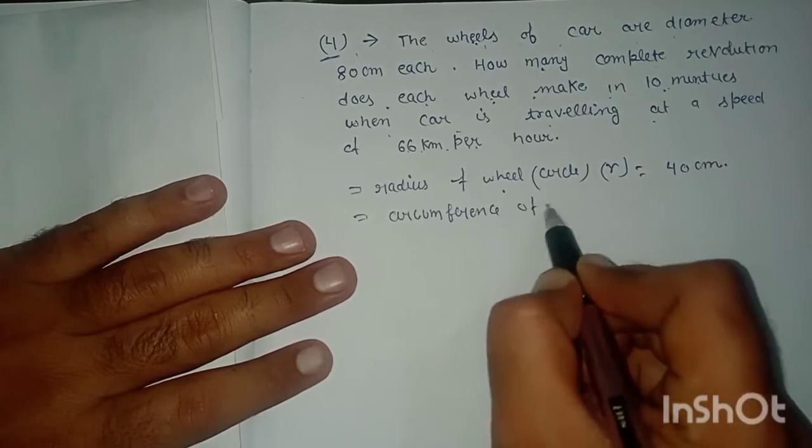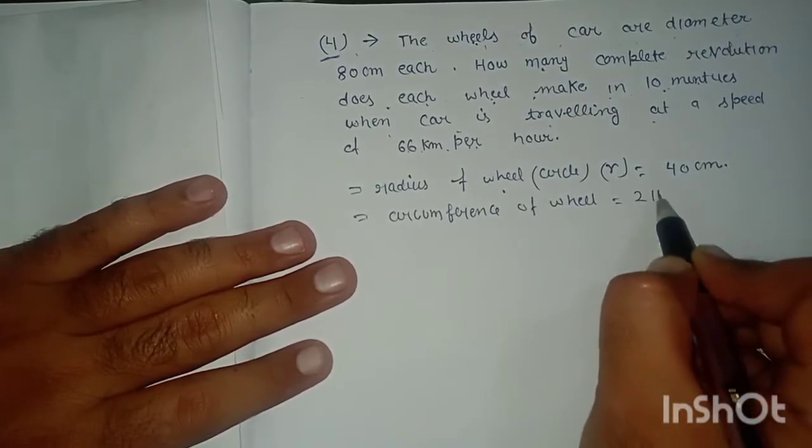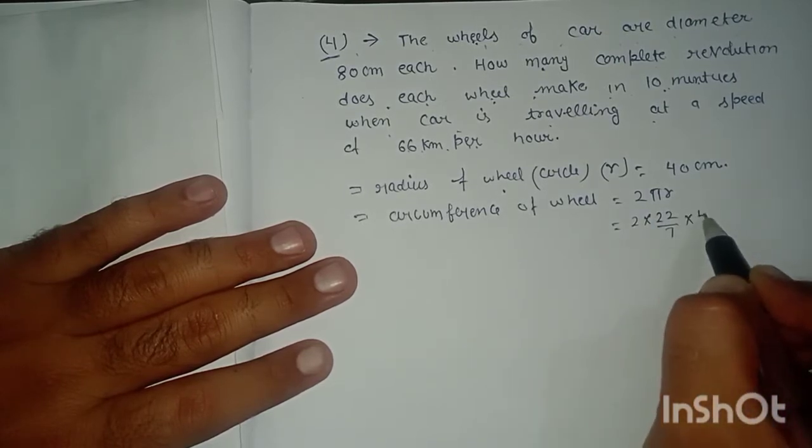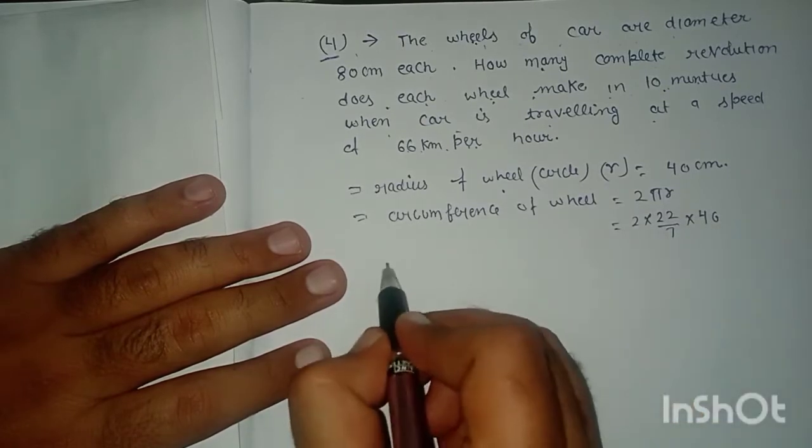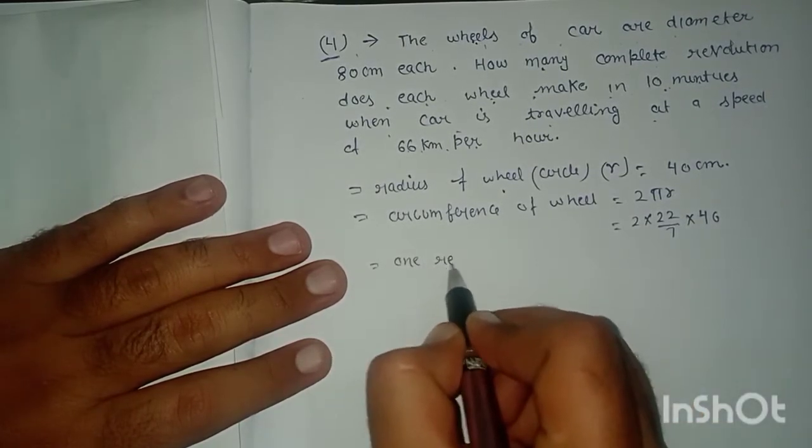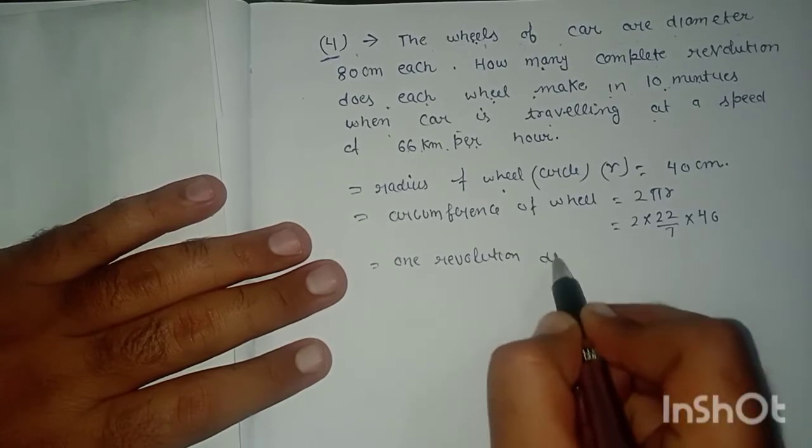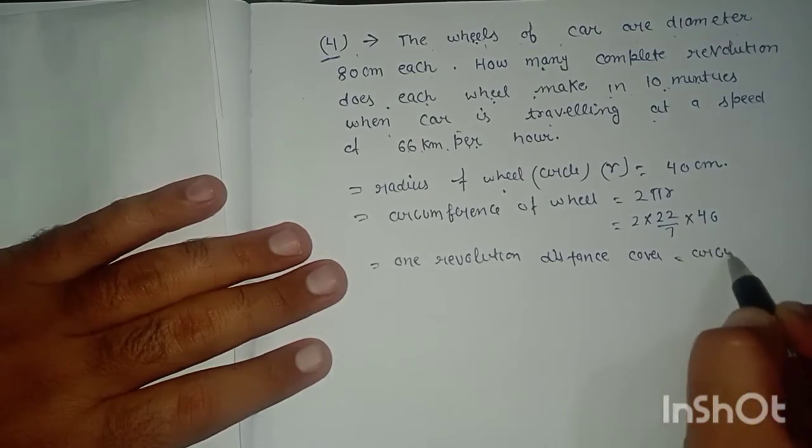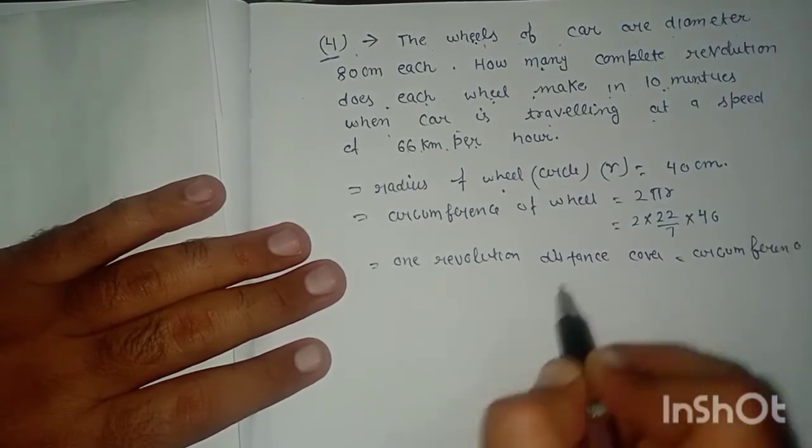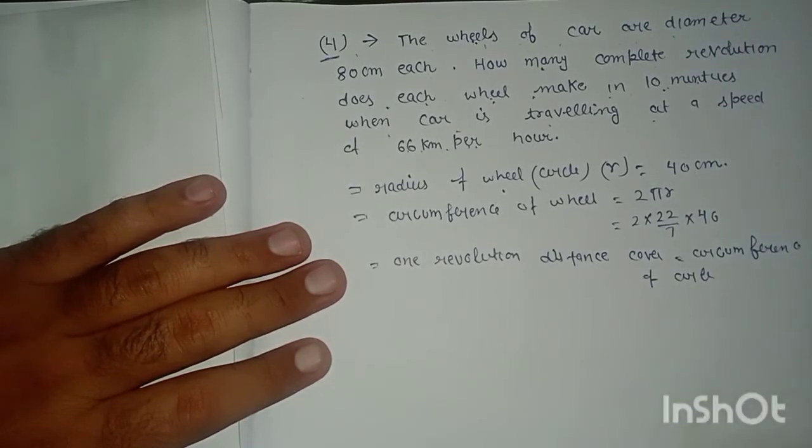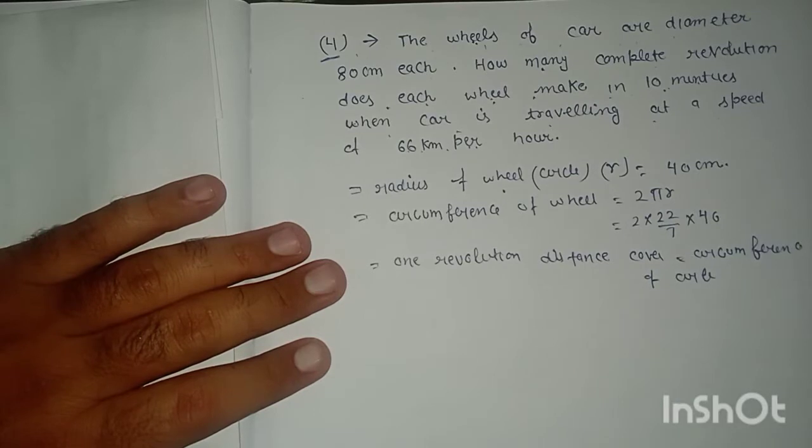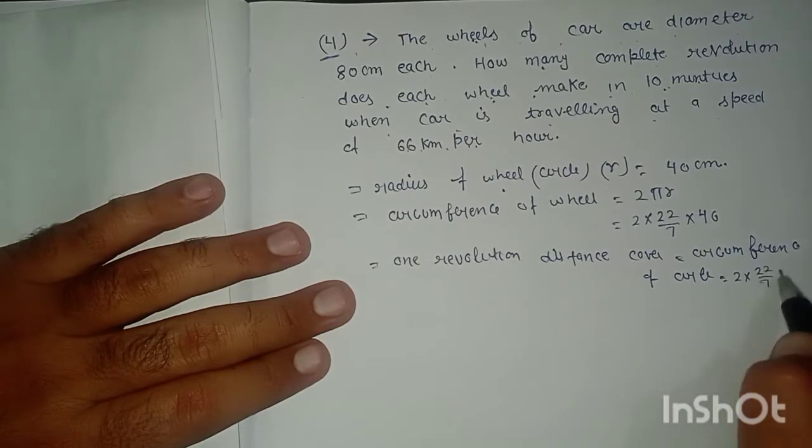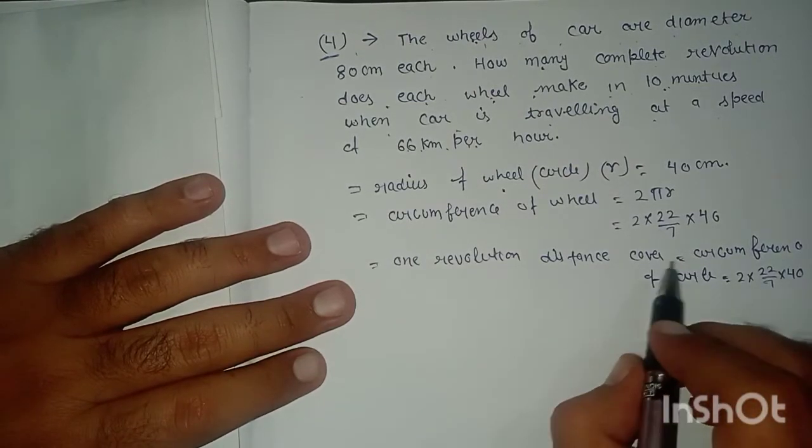The circumference of the circle equals 2 × π × r, which is 2 × 22/7 × 40. This gives us the distance covered in one revolution.